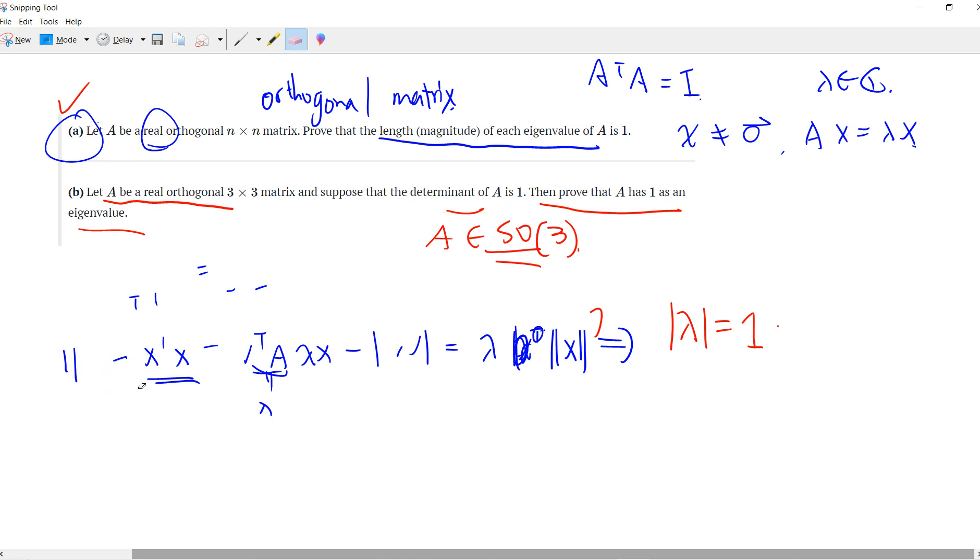This is a very interesting problem, because in part A, we only know that the magnitude of each eigenvalue is 1. But we are not restricted to exactly 1. We only add one condition: that the determinant is 1.